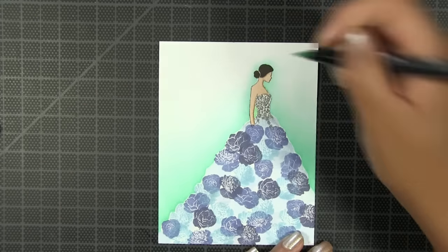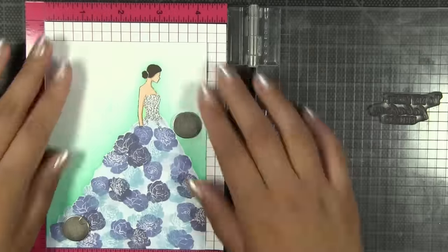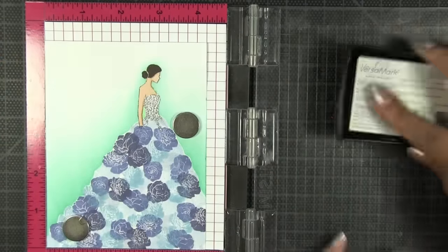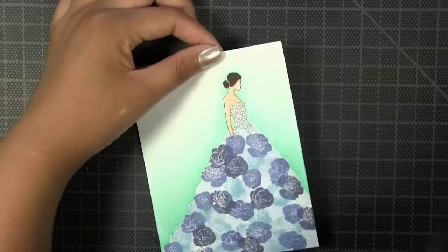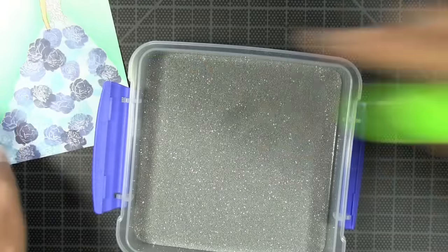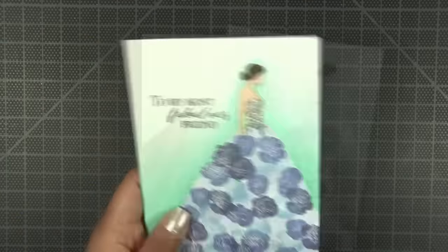Now for the sentiment, I am using the 'to my most fabulous friend' sentiment from our Haute book set, and I am going to heat emboss this in the same silver glitter embossing powder as the bodice of the dress.